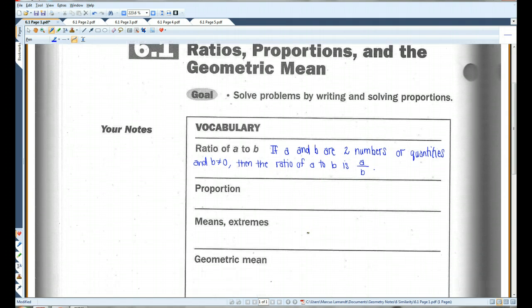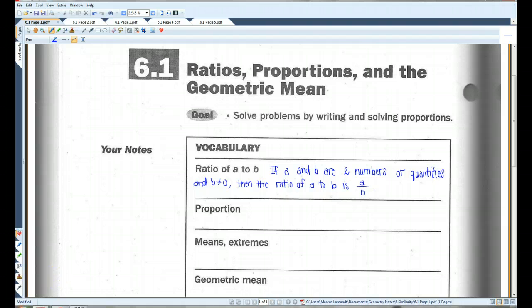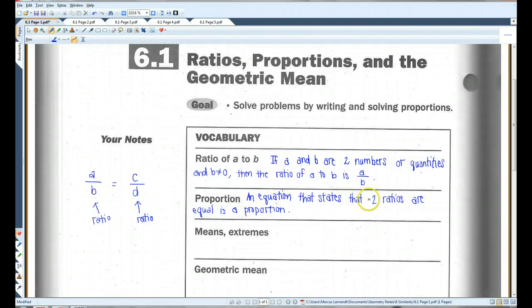In a sec, we'll do an example involving a ratio. A proportion, an equation that states that two ratios are equal, is a proportion. So, for example, if you have a ratio A over B, and you set it equal to some other ratio, C over D, this equation as a whole is a proportion.